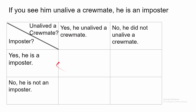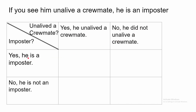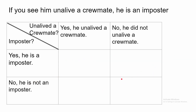We have a truth table right here that gives you all of the possible scenarios. Either you saw him on the live crewmate, or you did not see him on the live crewmate. Either he is an imposter or he is not. Let's look at these four possible scenarios and which ones are possible.